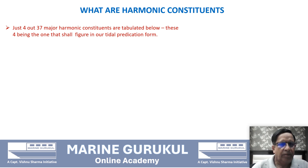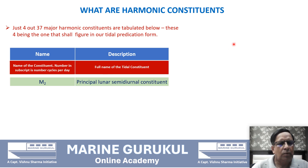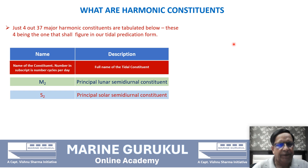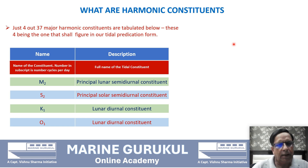The name of each constituent is given, and the subscript number represents the number of cycles per day — one cycle a day or two cycles a day. M2: 'M' stands for moon, '2' means two cycles a day — the principal lunar semi-diurnal constituent. S2 is the principal solar semi-diurnal constituent, also two cycles a day. K1 is the lunar diurnal constituent — one cycle a day. O1 is also a lunar diurnal constituent — one cycle a day.